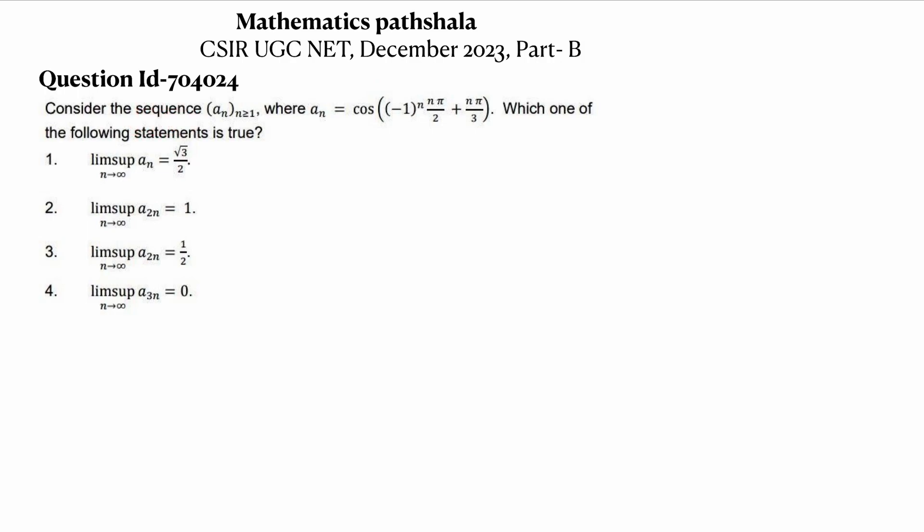Consider the sequence a_n where a_n equals cos[(-1)^n · nπ/2 + nπ/3]. Which one of the following statements is true?